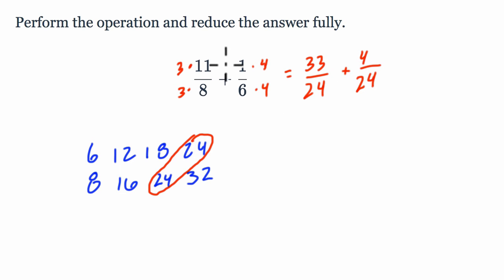So I multiply 1/6 by 4 over 4, and now when I add these two, all I have to do is add the numerators, the top numbers. 33 plus 4 is 37, and that's out of 24.